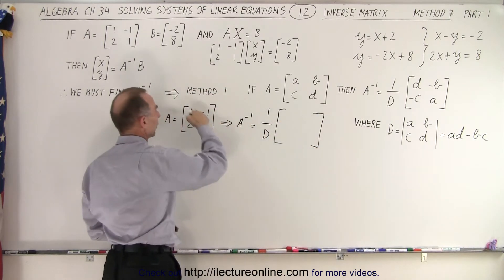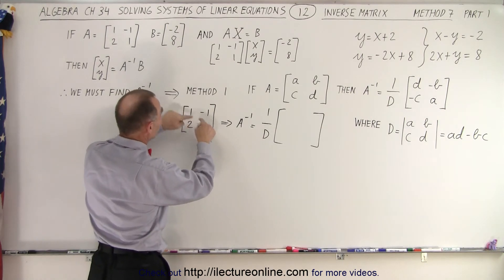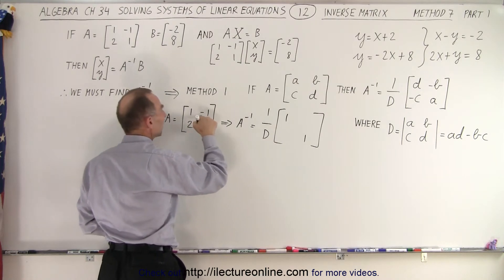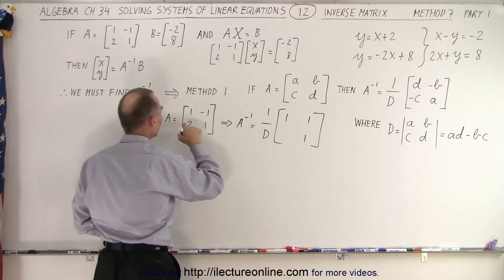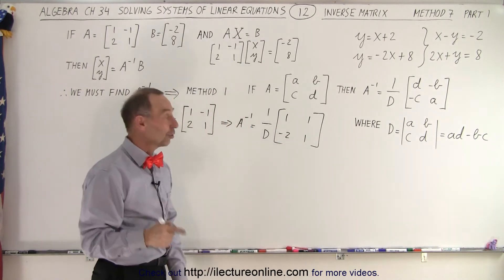notice, we're going to replace those two numbers, so we're going to put this one over here and that one over there, so nothing really changes, and then we're going to put negative signs in front, so the negative 1 becomes a positive 1, and the positive 2 becomes a negative 2. And all we have to do now is find the determinant.